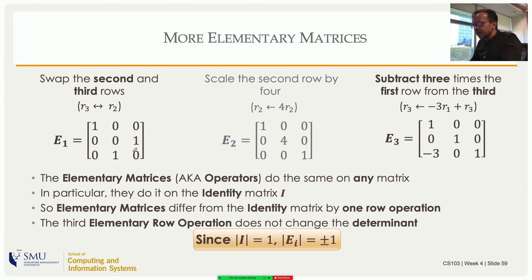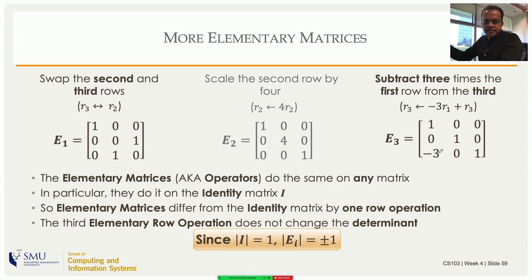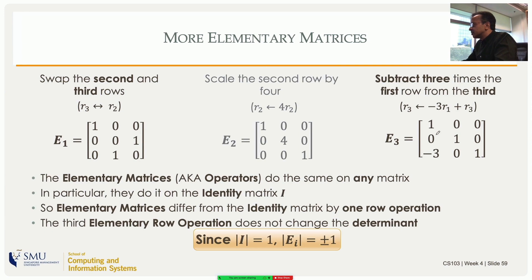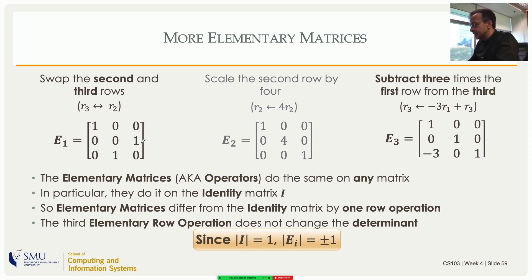The key insight from the row picture is: what an elementary matrix does to the identity, it does to any matrix. So we can just take the identity matrix, apply the desired row operation, and the result is the elementary matrix for that operation. All elementary matrices differ from the identity by just one row operation — a swap, a scaling, or adding a multiple of one row to another. The determinant: the swap changes sign, so that elementary matrix has determinant minus one.